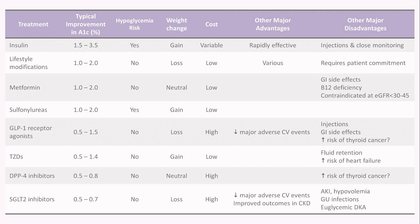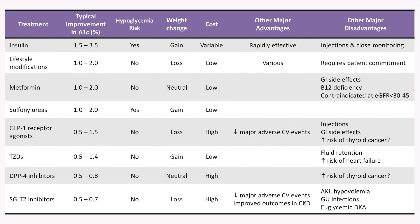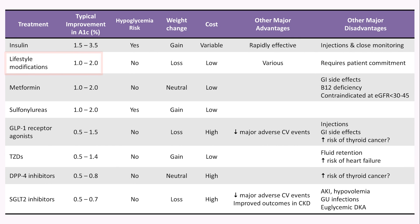Here's a summary of most interventions for type 2 diabetes which directly impact glycemic control, listed in order of typical improvement in hemoglobin A1c with initiation and optimization of treatment. Since diabetes is predominantly a disorder of insulin deficiency or resistance, it makes sense that exogenous insulin is the most effective treatment. Interestingly, lifestyle modifications — predominantly improved diet and weight loss — are as effective or more effective than any other medication we have.